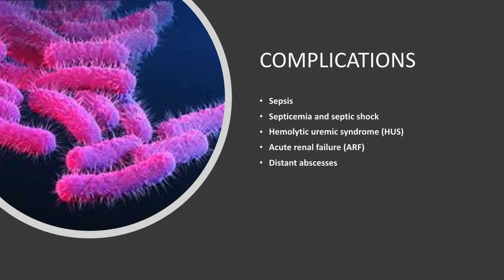Hemolytic uremic syndrome features high bilirubin, high blood urea, and acute kidney injury. Interestingly, if you transplant these kidneys into another patient, they would work—it's probably due to bacterial exotoxin toxicity. Acute renal failure is a well-known complication due to fluid loss, and distant abscesses can occur in the brain, intestines, liver, and elsewhere.